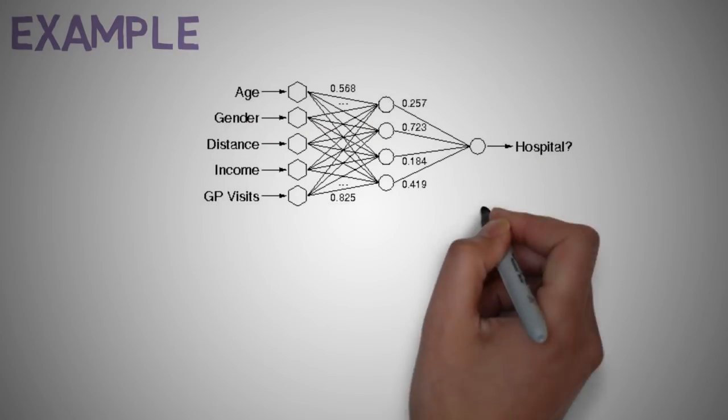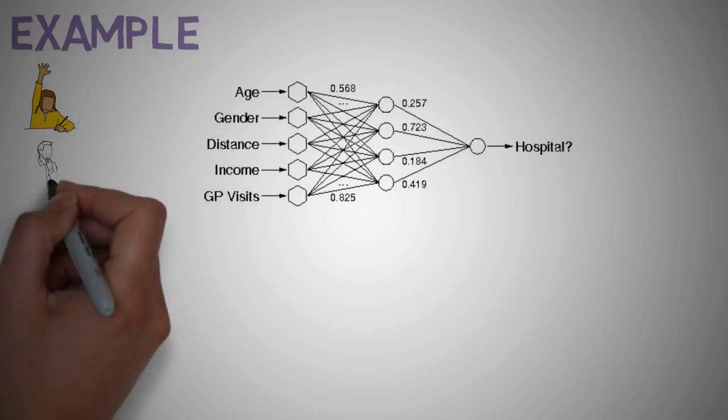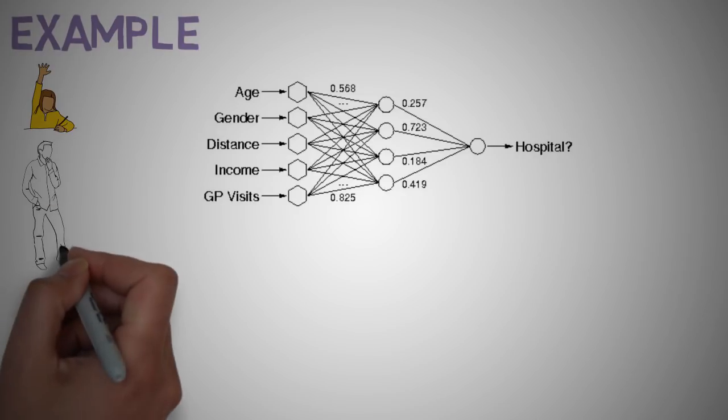So how does a neural network work? Let's take a look at an example to get an idea of how neural networks work in action. So say we already trained a neural network, meaning our weights are optimized for this application. We have our input layer, which is a set of features such as age, gender, distance to the hospital, income and GP visits. Our output, which is our dependent variable, is the probability that the person will be hospitalized.